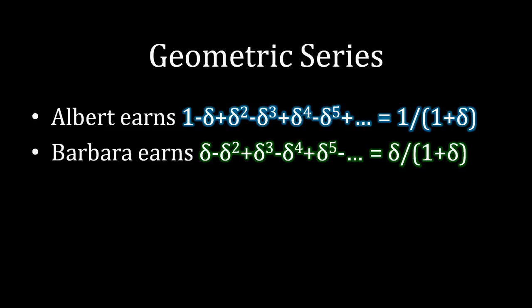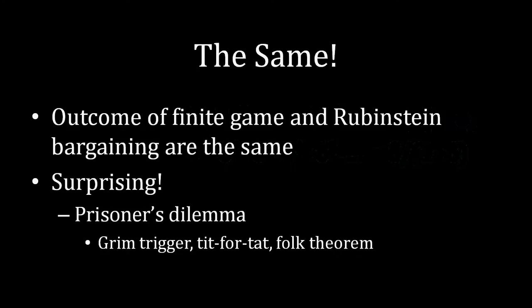The sum of a geometric series, as the number of periods becomes arbitrarily large, is equal to what you see on your screen now. So if we keep extending out those payoffs for Albert and Barbara, Albert's payoff is going to start becoming closer and closer to 1 over 1 plus delta, and Barbara's payoff closer and closer to delta over 1 plus delta. These are identical to the payoffs for the Rubenstein bargaining game. The alternating offers bargaining game with a finite number of periods, as you keep adding more and more periods, is essentially becoming the Rubenstein bargaining game.